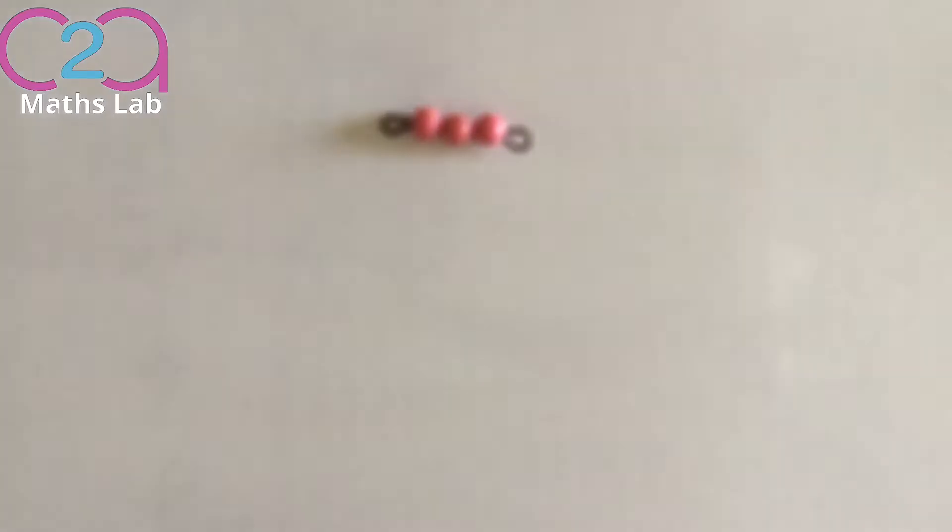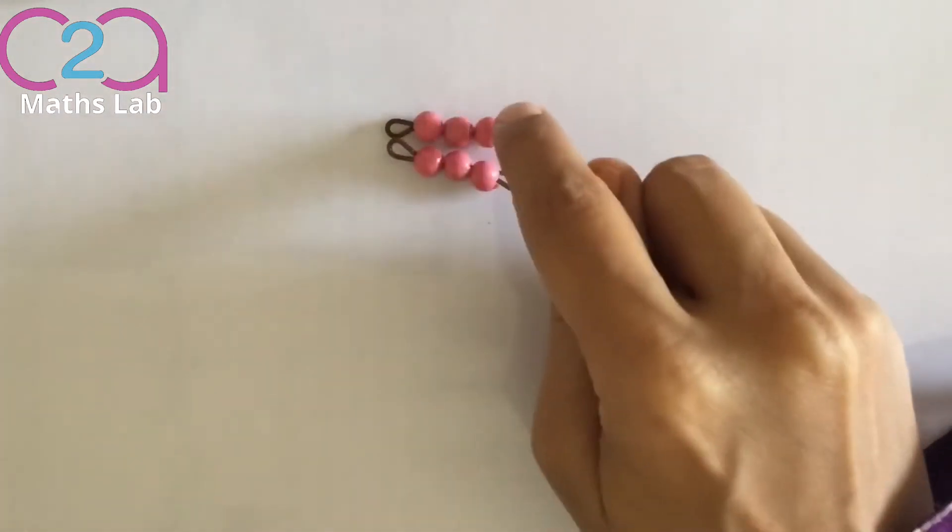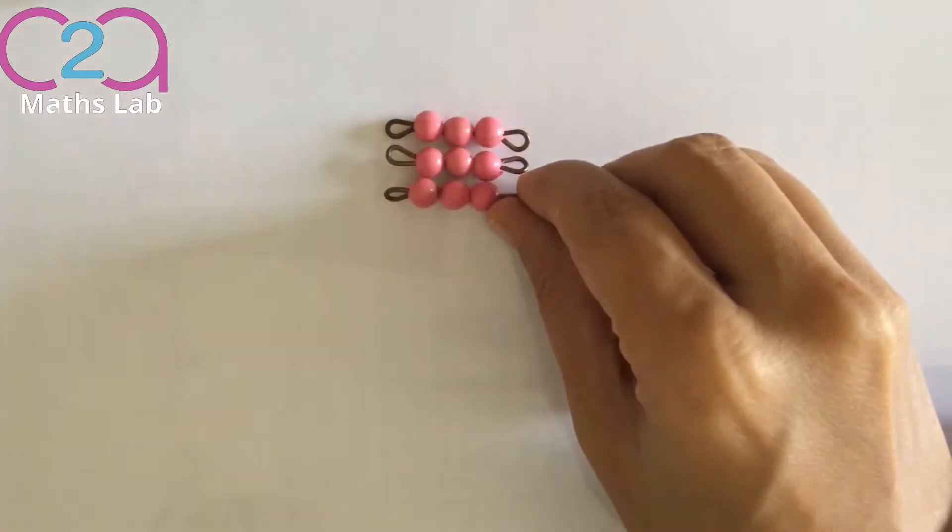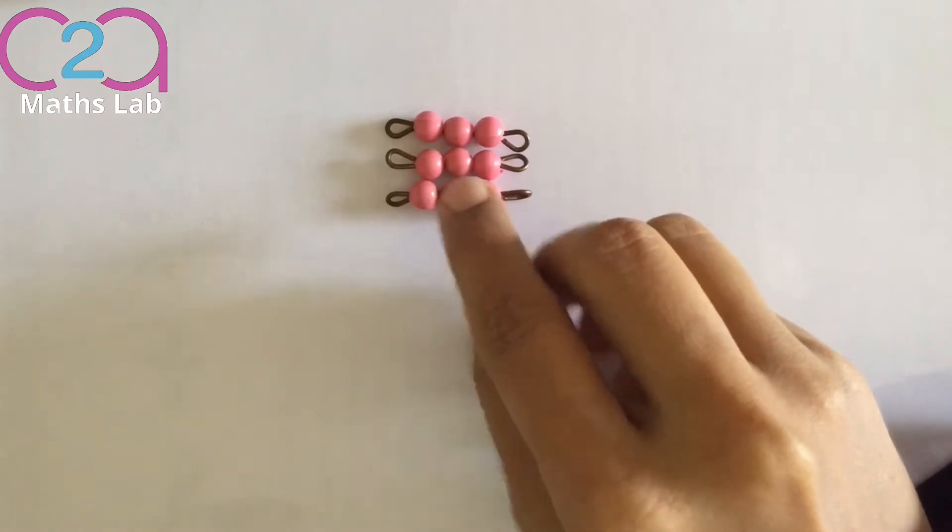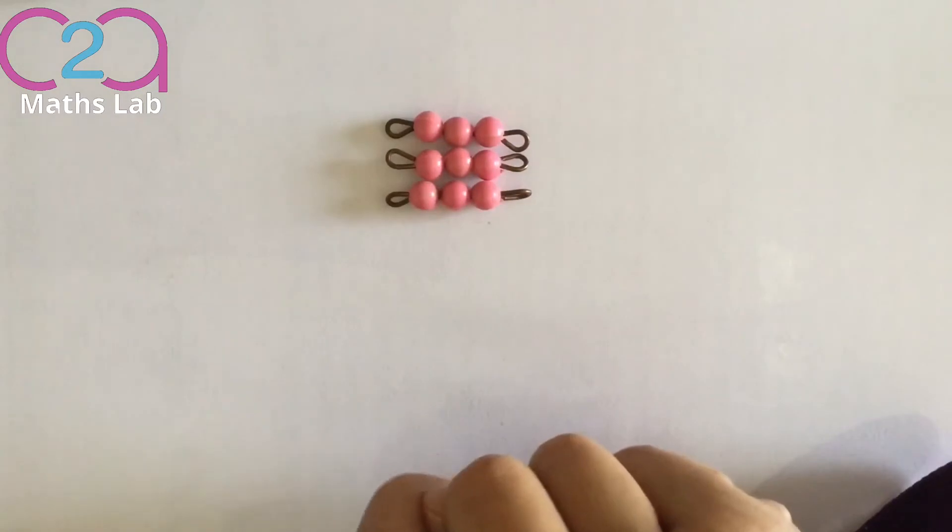Let's make a square of number 3. So square means all 4 sides equal. So all 4 sides equal means 3 on this side, 3 on this side. 3 times 3. So this is a square now, you can see 3 on every side.